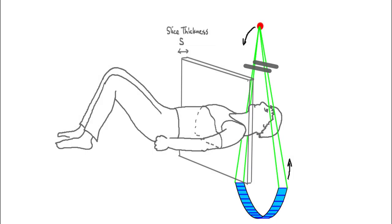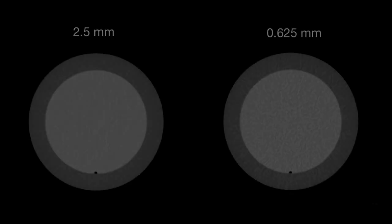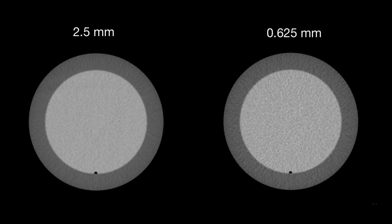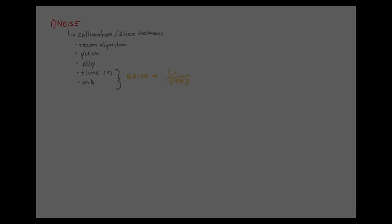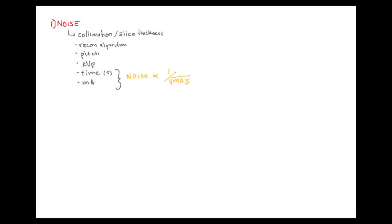Remember that you can control how thick the slice is. Here's an example of two different slice thicknesses — you can see that the thinner slice on the right has a lot more noise. Of course, the advantage of a thinner slice is you get higher resolution, especially in the superior-inferior dimension. It really comes down to the fact that CT reconstructions are controlled by photon counting noise — that square root of N dependence.